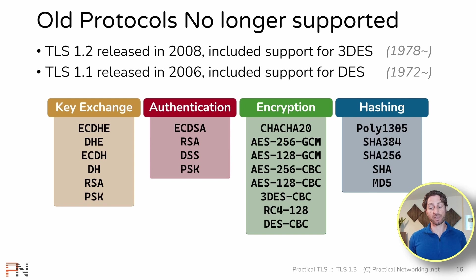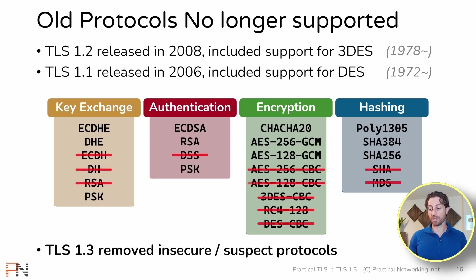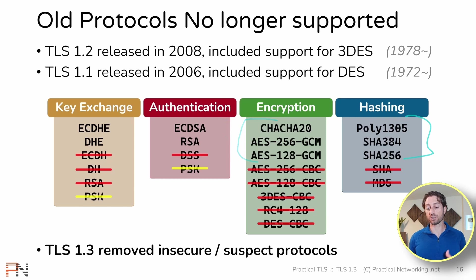TLS 1.3 gets rid of that and says any protocol that is even mildly suspicious to be less than secure, we are no longer going to support, which means this list of protocols that was supported in TLS 1.2 and prior is shrank considerably. Any protocol which is even mildly insecure is no longer supported in TLS 1.3. The PSK versions of key exchange and authentication sort of go away but also come back in a different way — we'll have dedicated lessons talking about each of those. Either way, notice there are far fewer protocols allowed for each of these four security services. That is the first major change to cipher suites in TLS 1.3.